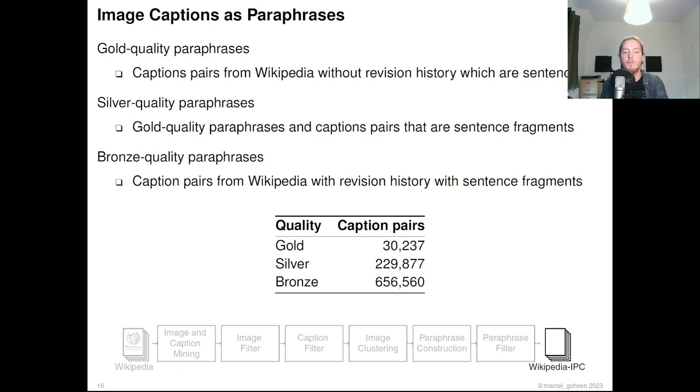We distinguish three different quality levels for our paraphrases in the dataset based on different mining pipelines. Gold-quality paraphrases are caption pairs, which are grammatically correct sentences only, and are mined from the Wikipedia dump without revision history of articles. The gold-quality dataset consists of roughly 30,000 caption pairs. Silver-quality paraphrases also allow for captions which are sentence fragments. With these, we found around 230,000 caption pairs.